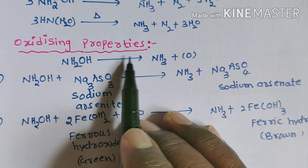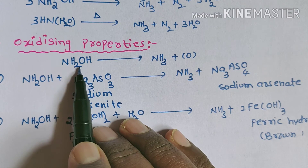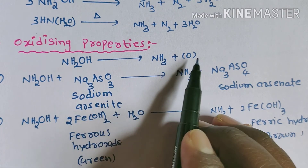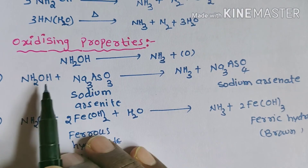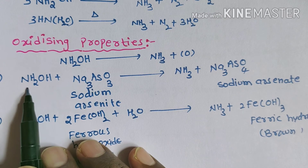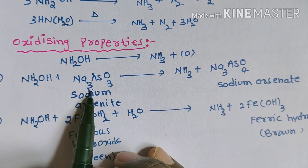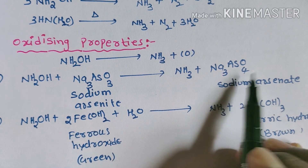Hydroxylamine decomposes to give ammonia and one nascent oxygen atom. From this hydroxylamine, one oxygen atom is given to sodium arsenite and it becomes sodium arsenate. This is a simple equation to balance.